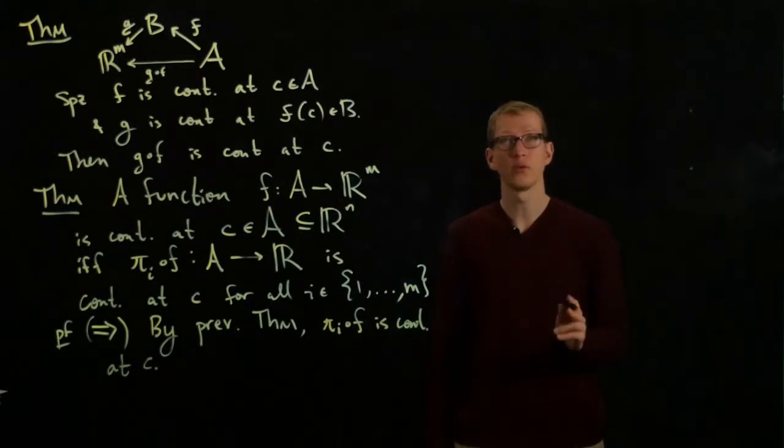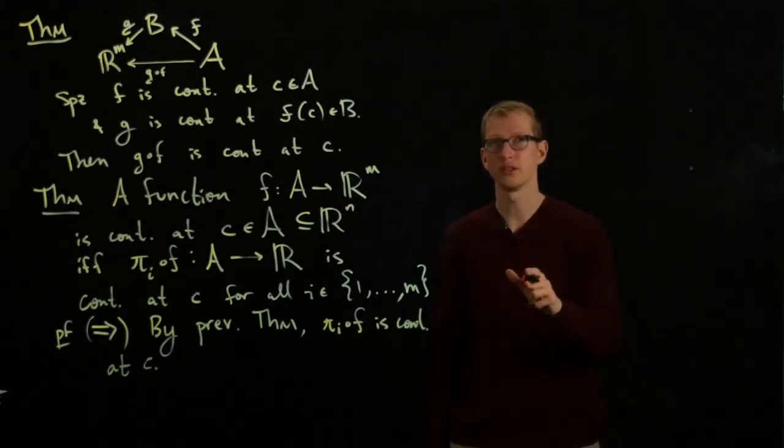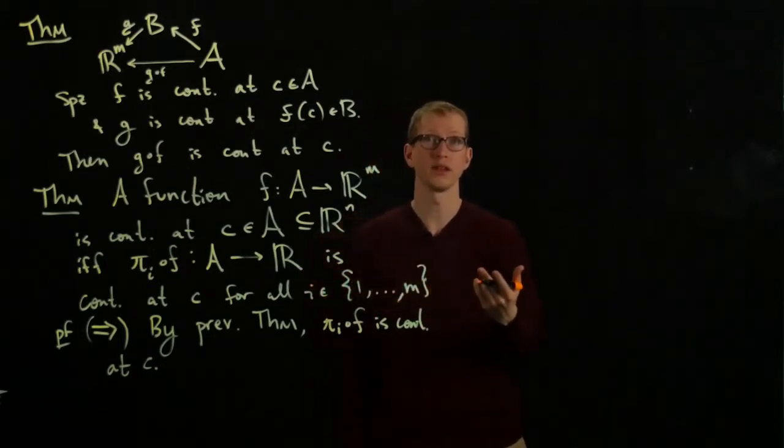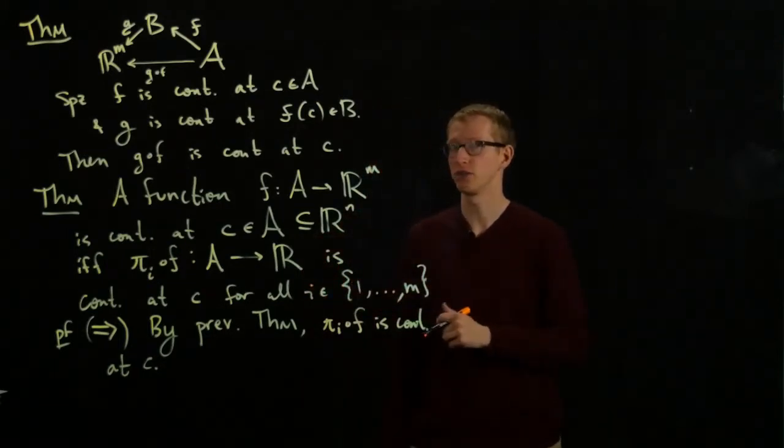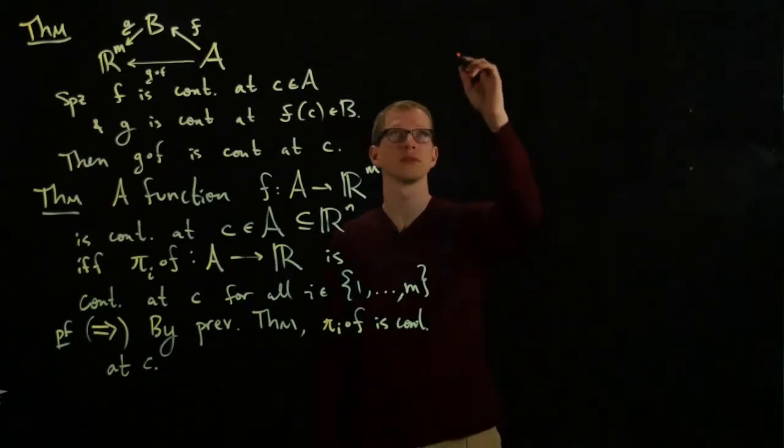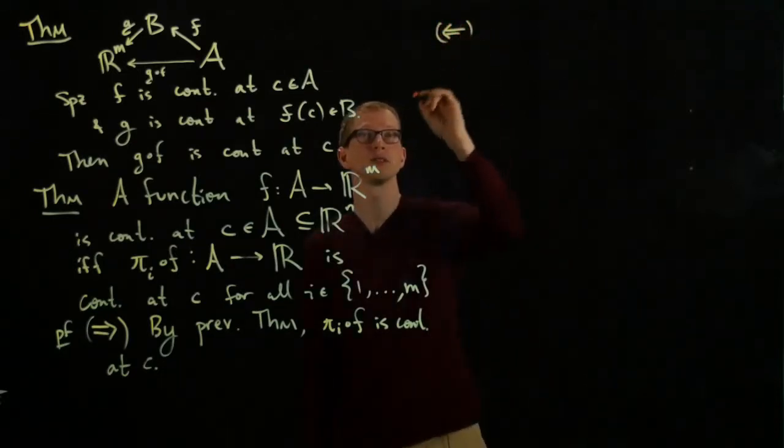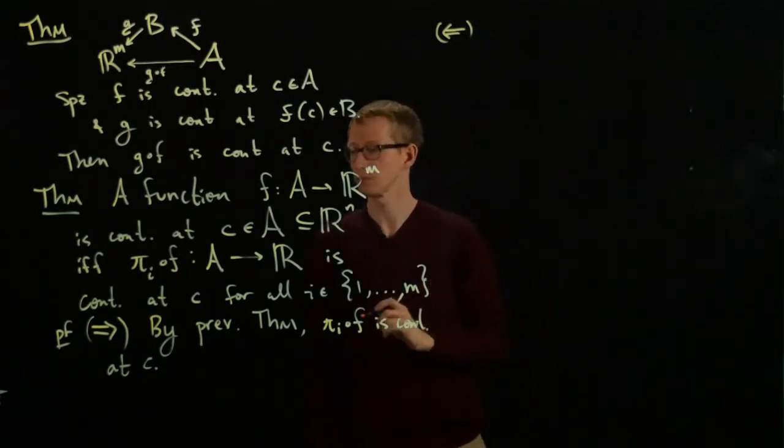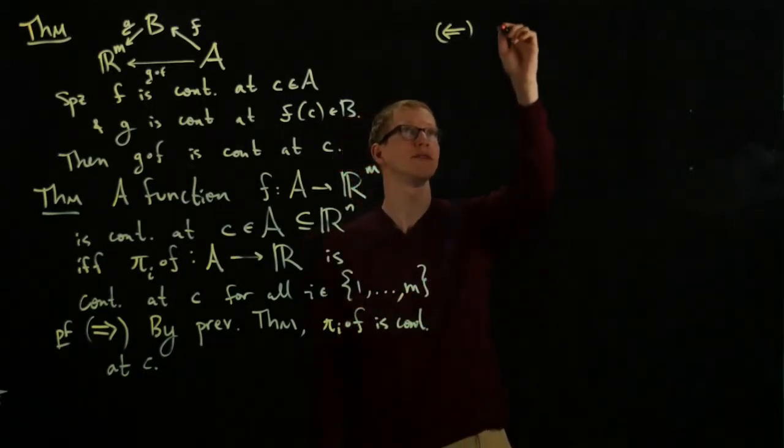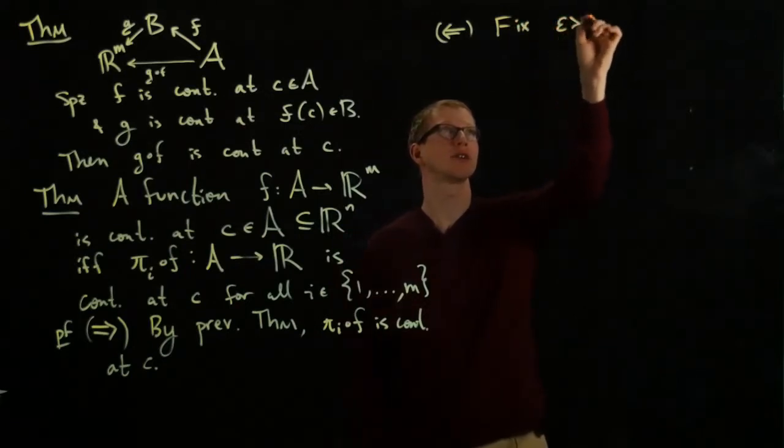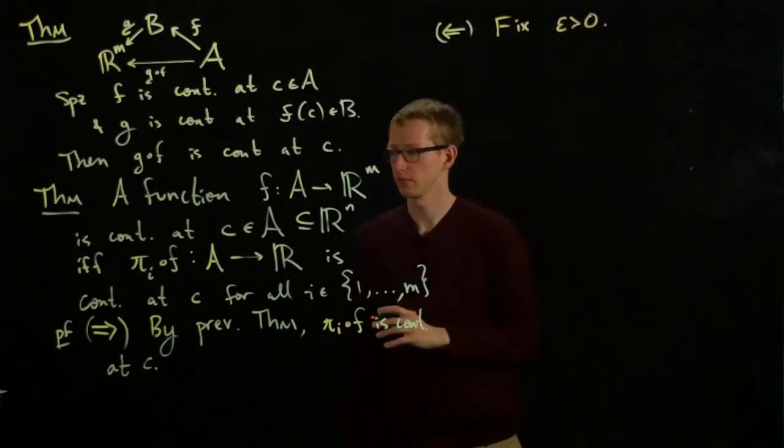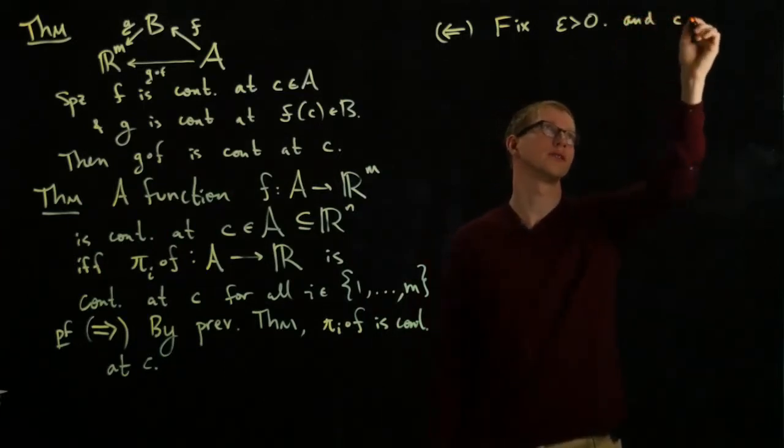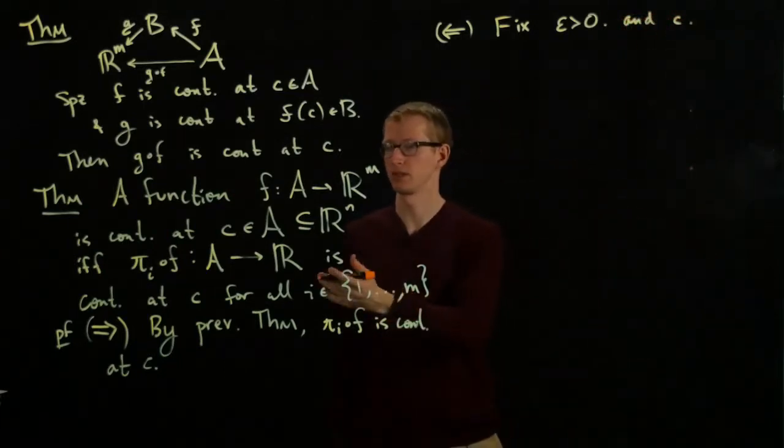In the second part of the proof, we'll only assume that the projection, the function composed with the projections, namely the component functions, are continuous, then F is continuous as well. So for the converse, we will try to do this using an epsilon-delta argument. So fix epsilon greater than 0, and also, and C. C is fixed from the discussion to begin with anyway.